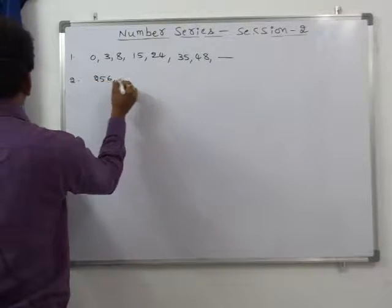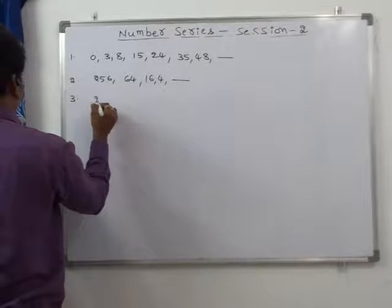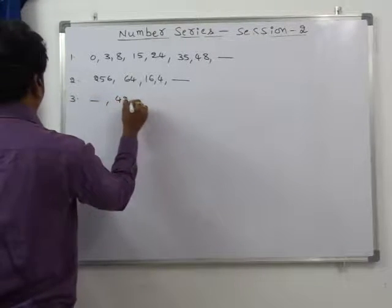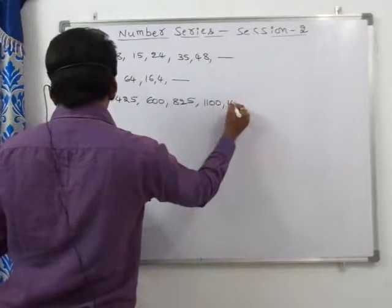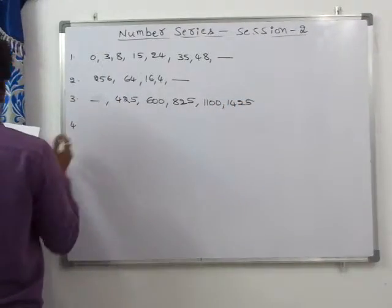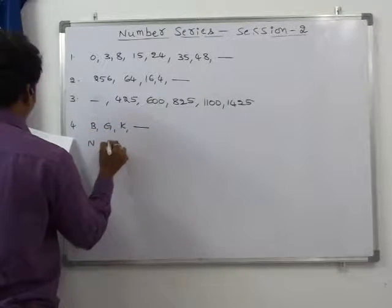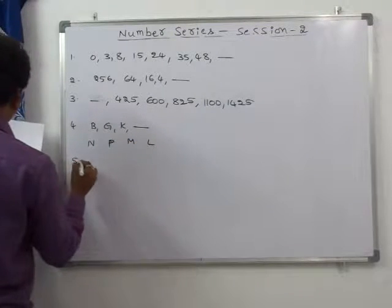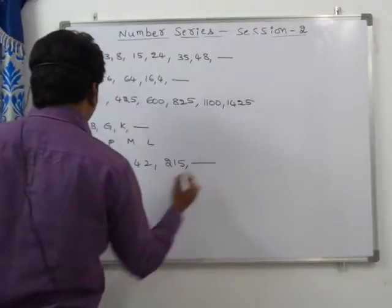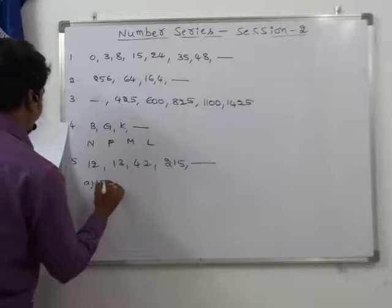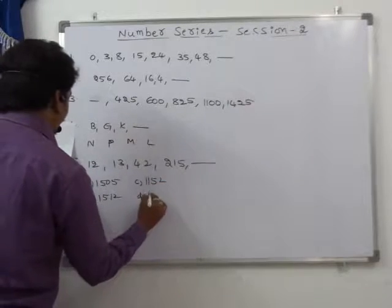Question 2: 256, 64, 64, 64 — what is the missing number? Question 3 (with values 425, 425, 825, 1100, 425). Question 4 is a letter series: B, G, K — options N, T, M, N. Question 5: 12, 13, 42, 215 — what is the next number? Options are 1505, 1512, 2152, and 1252.